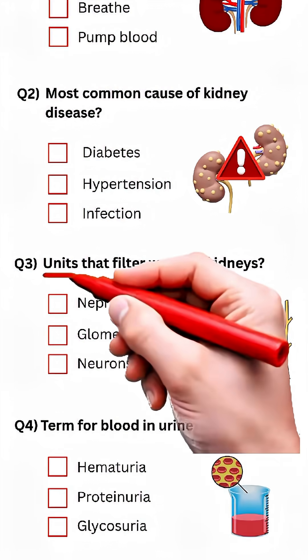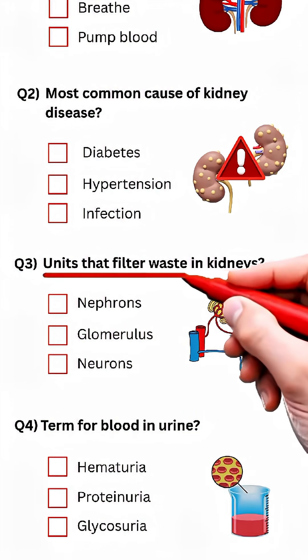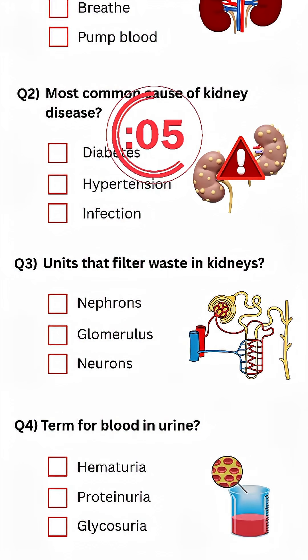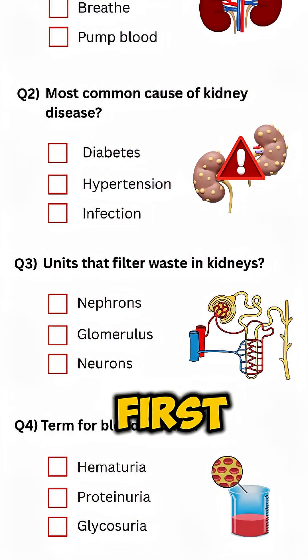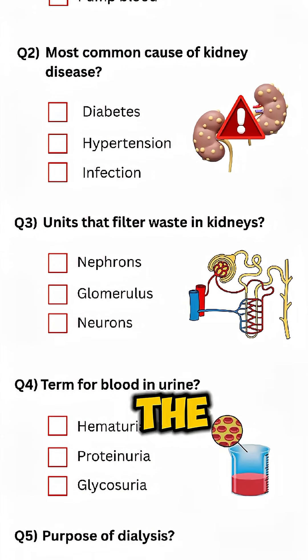Question three: units that filter waste in kidneys? Answer: nephron. If you got the first three correct, hit the like button.